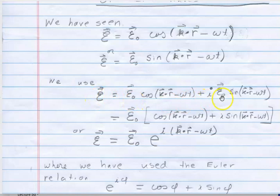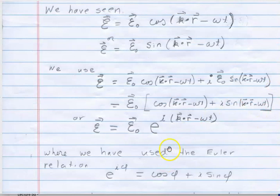I can factor out the amplitude portion, the vector amplitude, and I get cosine plus i sine. One can use the Euler relationship in general: e to the i phi equals cosine phi plus i sine phi, where i is the square root of minus one.